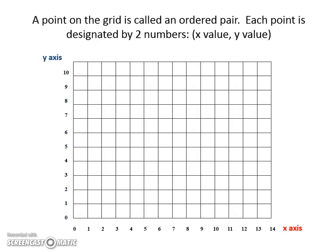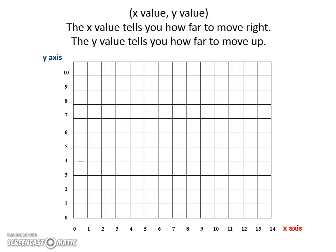So, a point on the grid is called an ordered pair, and each point is designated by two numbers. The first number, and it's always in parentheses, represents the x value, and the second number will represent the y value. So, the x value tells you how far to move to the right, and the y value tells you how far to move up.